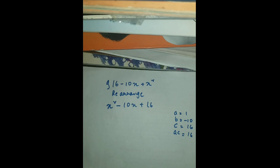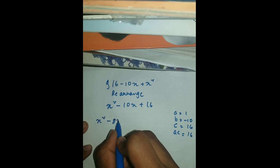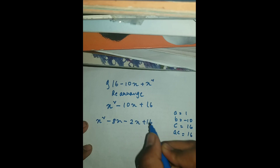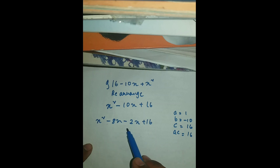Now we need two numbers: if we multiply them we get a·c which is 16, and if we add them we get minus 10. So we can split the middle term as x squared minus 8x minus 2x plus 16, because 8 times 2 is 16 and minus 8x minus 2x equals minus 10x.